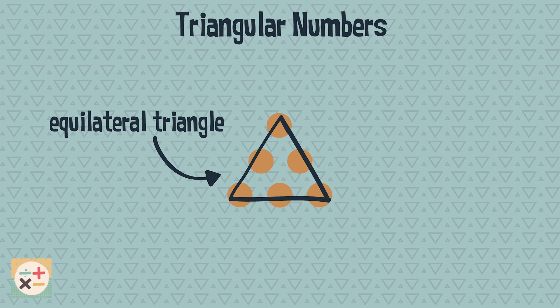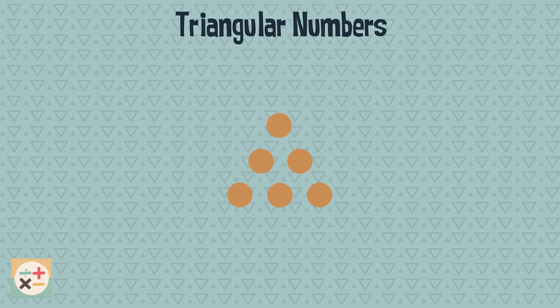Put simply, a triangular number represents the number of dots that can be arranged into an equilateral triangle. Here we have six dots that form an equilateral triangle, so this tells us that six is a triangular number.